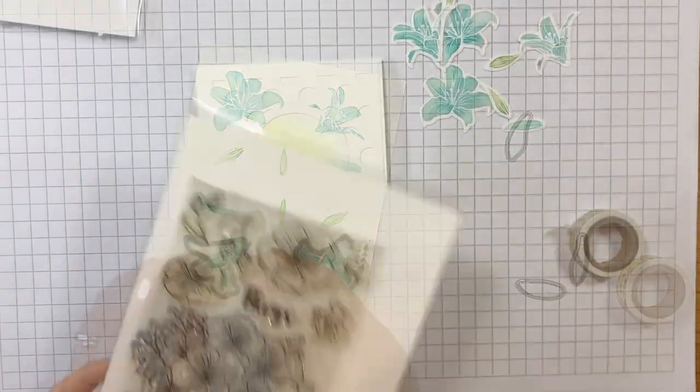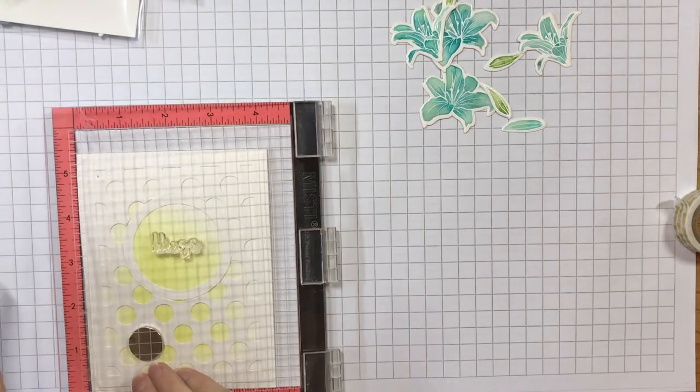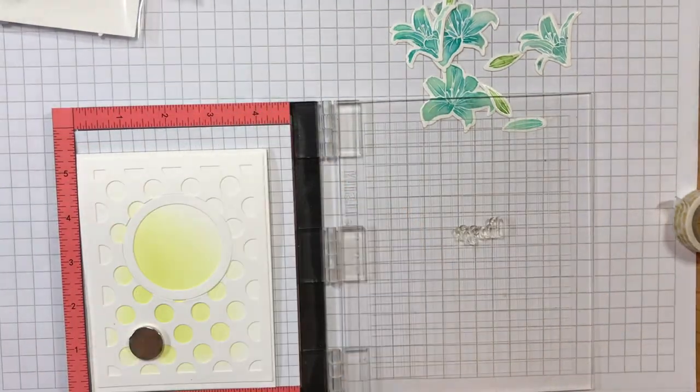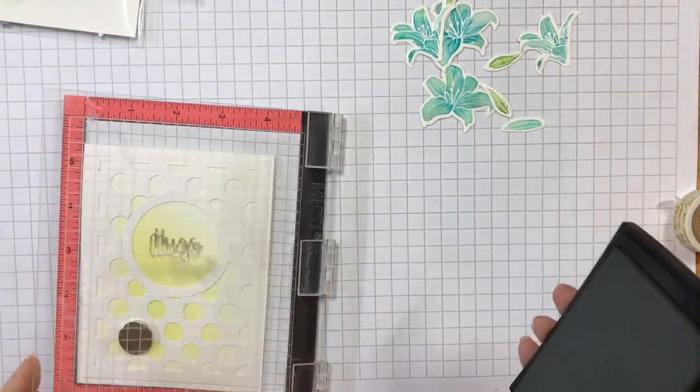Once the watercolor images were dry, I cut them out using the coordinating dies and set them aside. I picked out the 'hug' sentiment from the Floral Bouquet set and stamped it in the center of the circle aperture on the front of the card using fog dye ink.